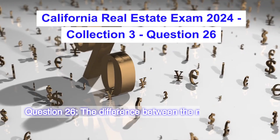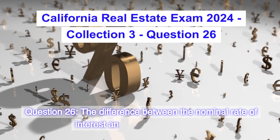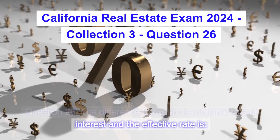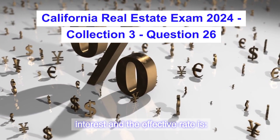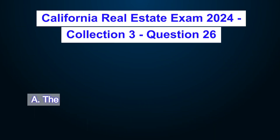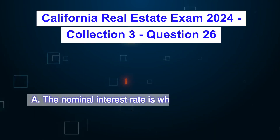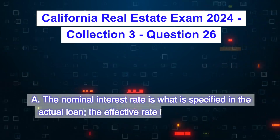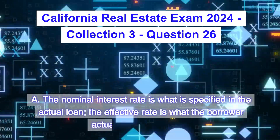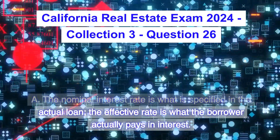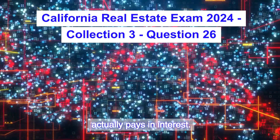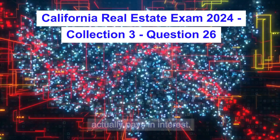Question 26. The difference between the nominal rate of interest and the effective rate is: A. The nominal interest rate is what is specified in the actual loan; the effective rate is what the borrower actually pays in interest.